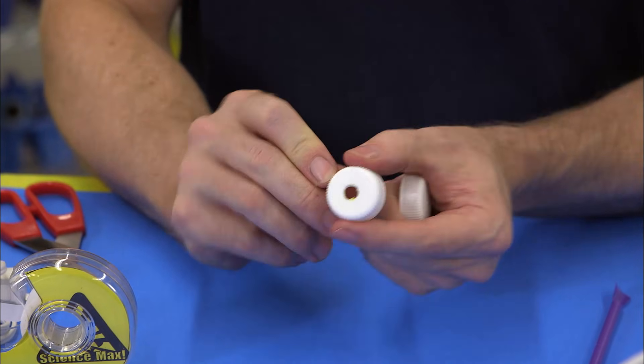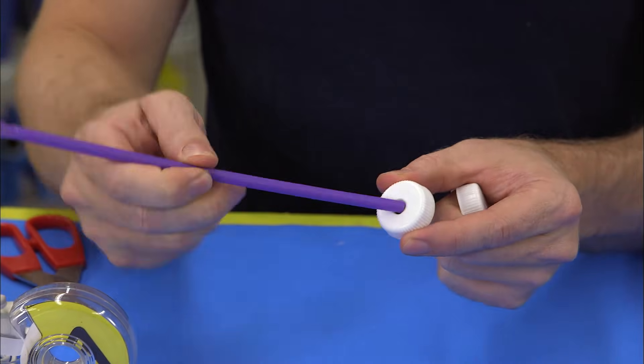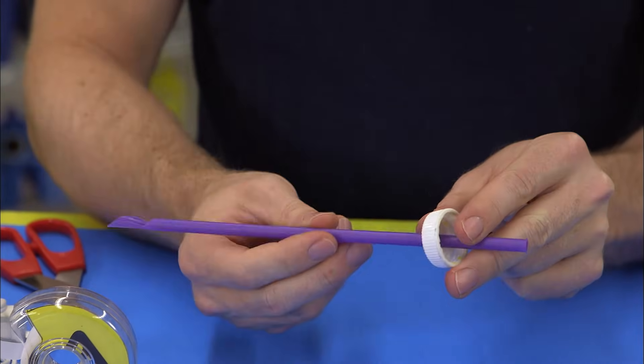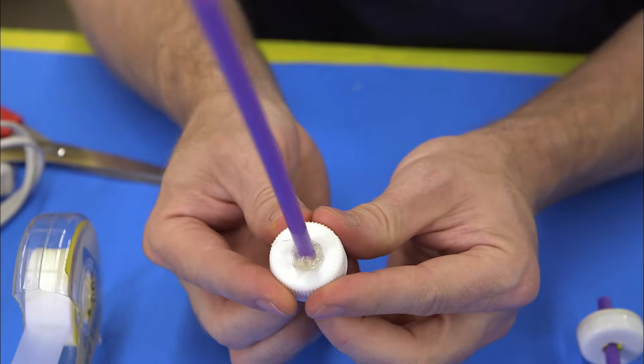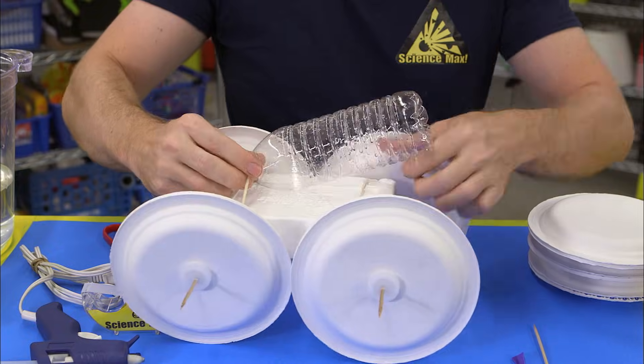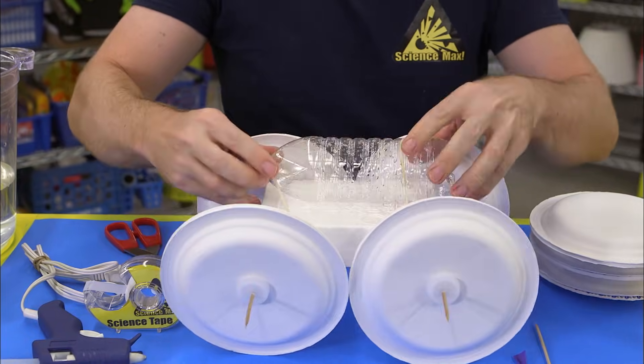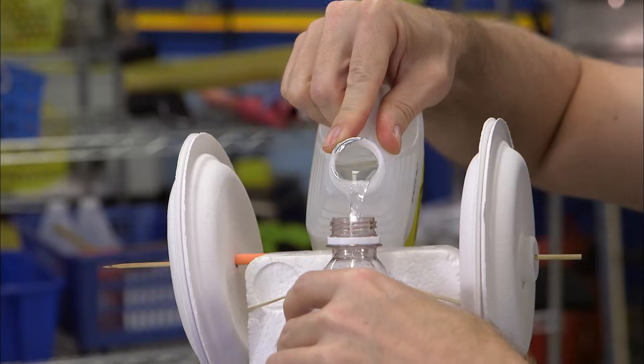Then take the water bottle cap and get an adult to help you make a perfect hole in it so that it fits your straw. Then use some modeling clay and hot glue to seal the straw and the cap so it's airtight. Attach the water bottle to the base of your car, then fill it with some water and vinegar.